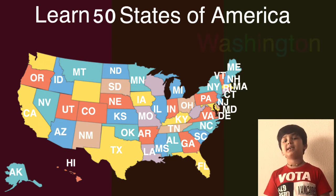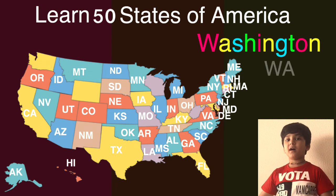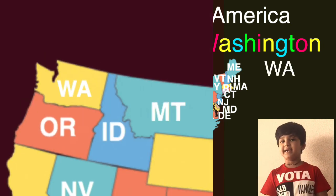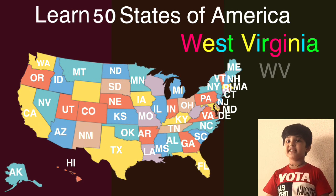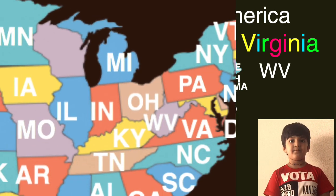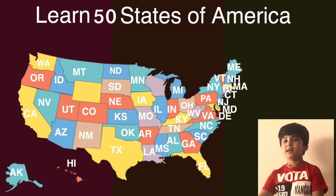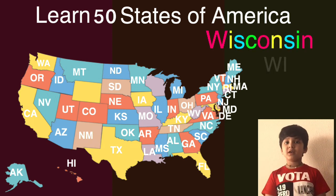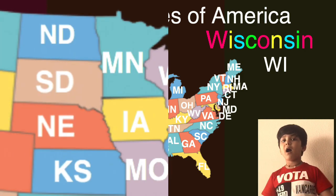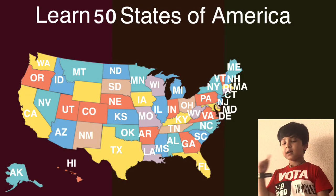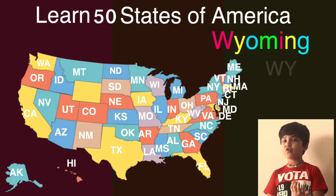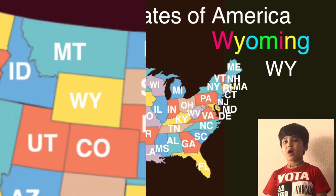The next one is Washington and the short one is WA. Here comes Washington on the map, can you guess what will come next? The next one is West Virginia and the short one is WV. Here comes West Virginia on the map, can you guess what will come next? The next one is Wisconsin and the short one is WI. Here comes Wisconsin on the map, can you guess what will come next? Next is Wyoming and the short one is WY. Here comes Wyoming on the map.